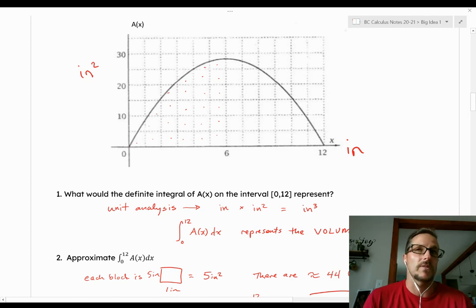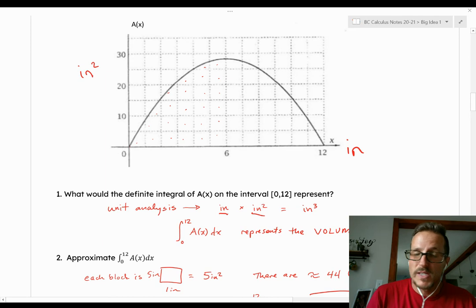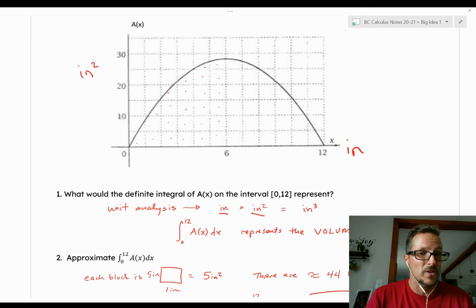So let's think about it. Since a definite integral is a product, let's multiply the units together. Okay, so the unit, the X units by the Y units would be inches multiplied by inches squared. And that's inches cubed. That's cubic inches. So think about it. What do you measure in cubic inches, cubic units? That's right. You measure volume in cubic inches. So the definite integral of this function, A(x), with respect to X on the interval 0 to 12 would represent the volume of the football.